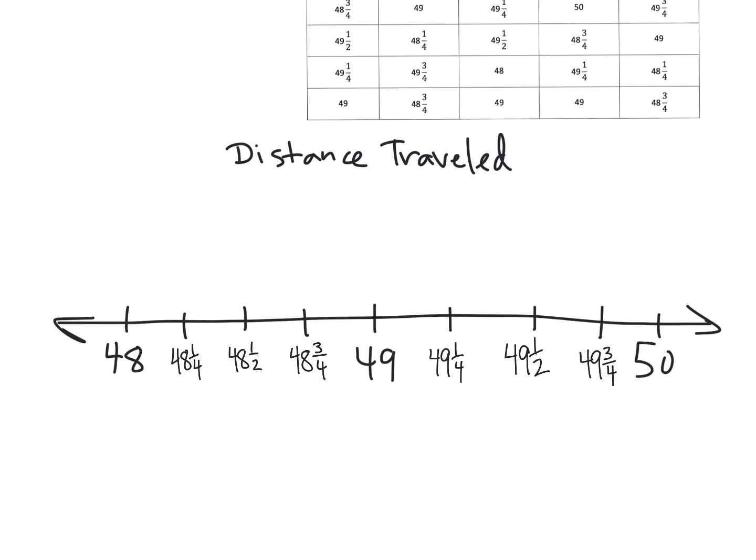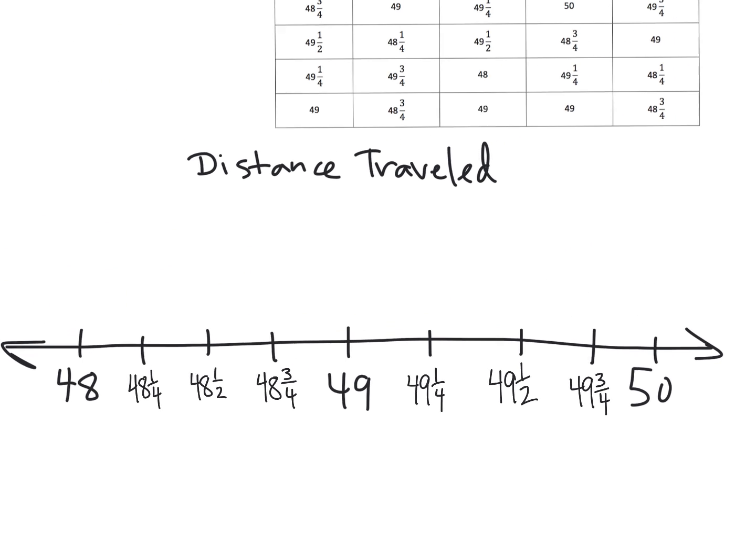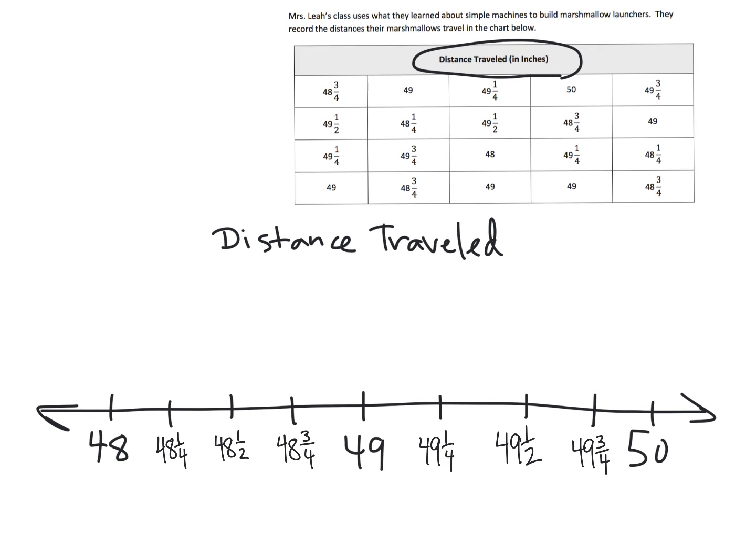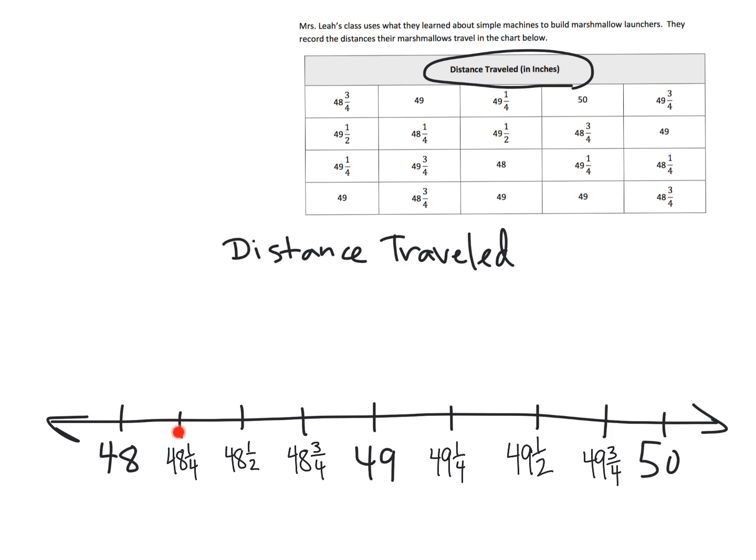And then we're going to keep going—49 and one quarter, 49 and a half, lastly 49 and three quarters. And if I zoom out, now you can see everything is working perfectly. I want you to notice that we've got our halves right here, smack dab in between 48 and 49 is 48 and a half, and there's 49 and a half which is smack dab in between 49 and 50.